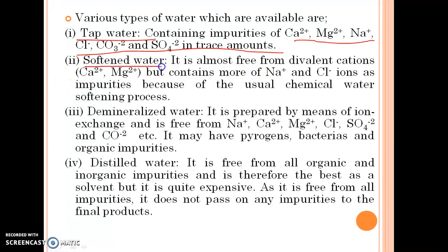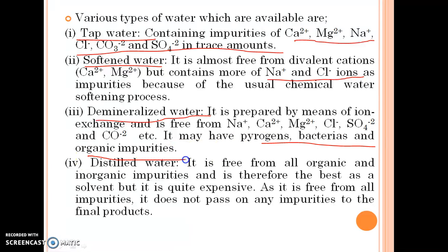Softened water is almost free from divalent cations but contains more sodium ions and chloride ions as impurities because of the usual chemical water softening process. Demineralized water is prepared by ion exchange and is free from sodium, calcium, magnesium, chloride, sulphate and carbon dioxide, but it may have pyrogens, bacteria and organic impurities. Distilled water is free from all organic and inorganic impurities and is therefore the best solvent, though it is quite expensive.